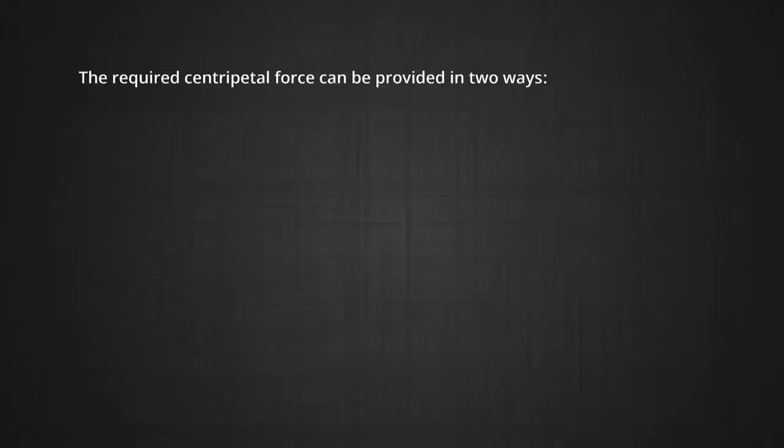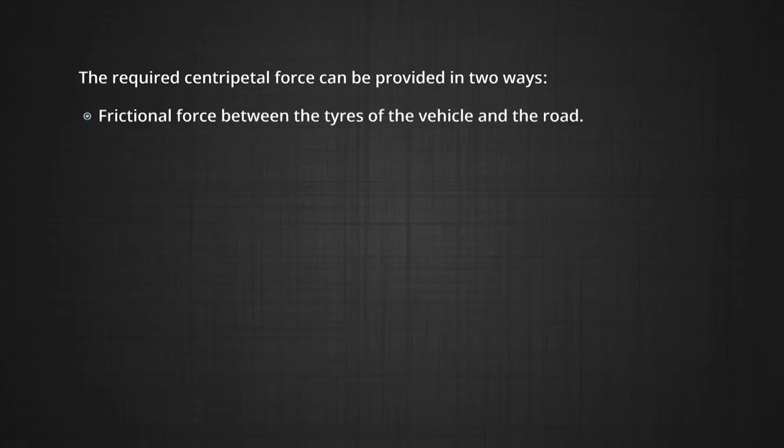Today we are going to learn about the concept of Banking of Roads. Whenever a vehicle moves along a curved road, the centripetal force is required for circular motion. If centripetal force is not present, the vehicle cannot travel along a circular path and will instead travel along a tangential path. The required centripetal force can be provided in two ways: one is the frictional force between the tyres and the road, and the second one is Banking of Roads.